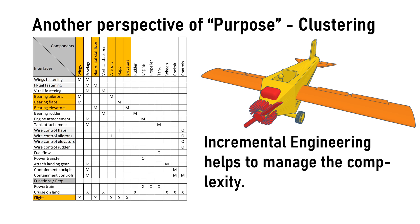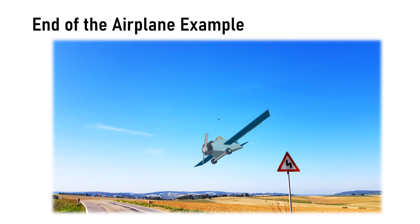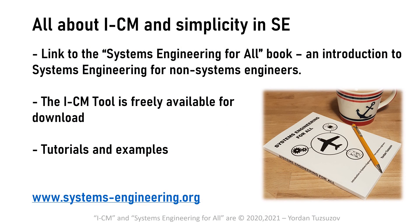And this is the end of our airplane example with ICM. The picture of the flying aircraft is a photo evidence of the successful engineering done with the method. You may not believe it's real though. On www.systems-engineering.org you can download the ICM tool for free, find tutorials and examples for the method or get the book Systems Engineering for All. The book is an introduction to systems engineering for non-systems engineers, product designers, project managers and anyone interested in product development and systems engineering. Thanks for watching.